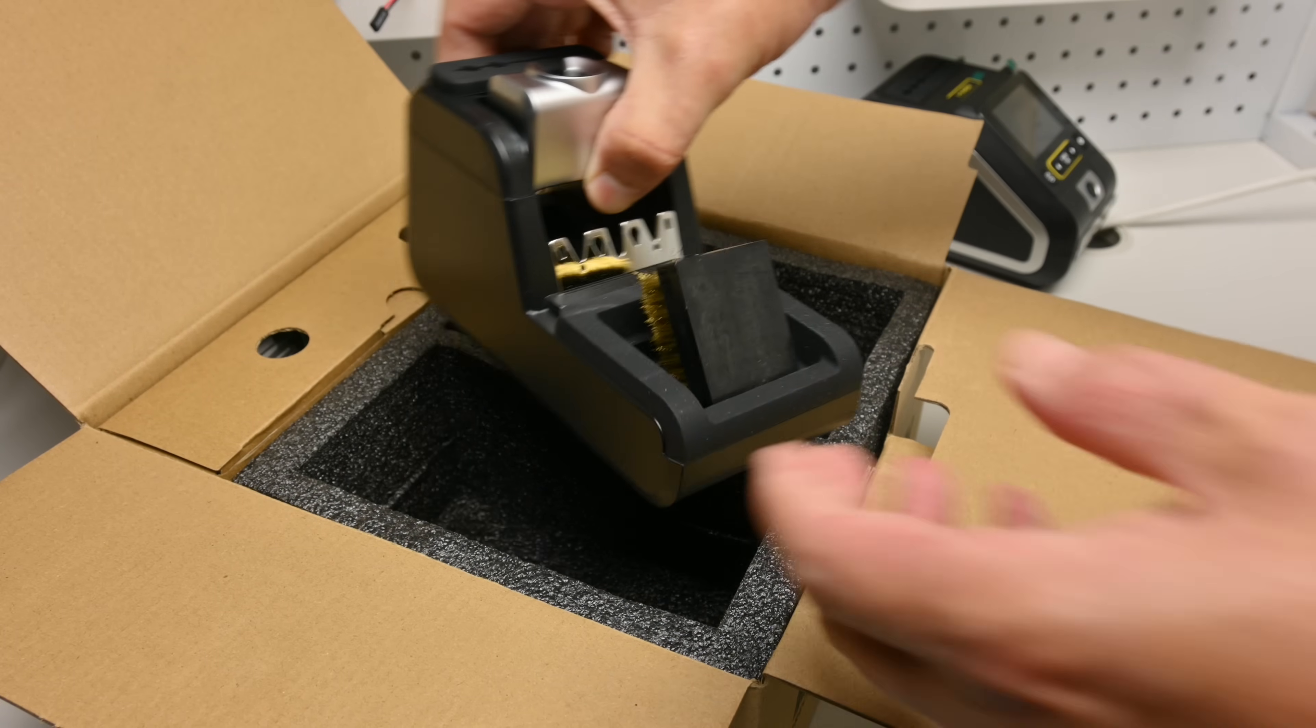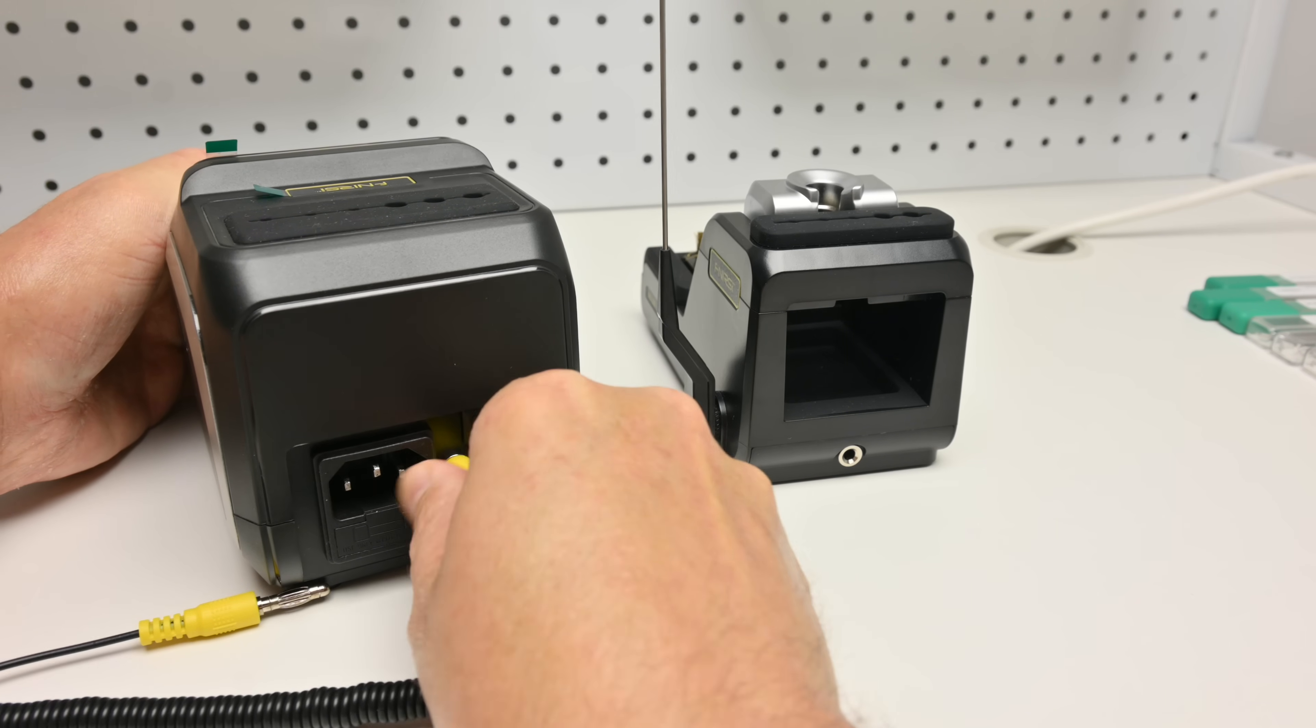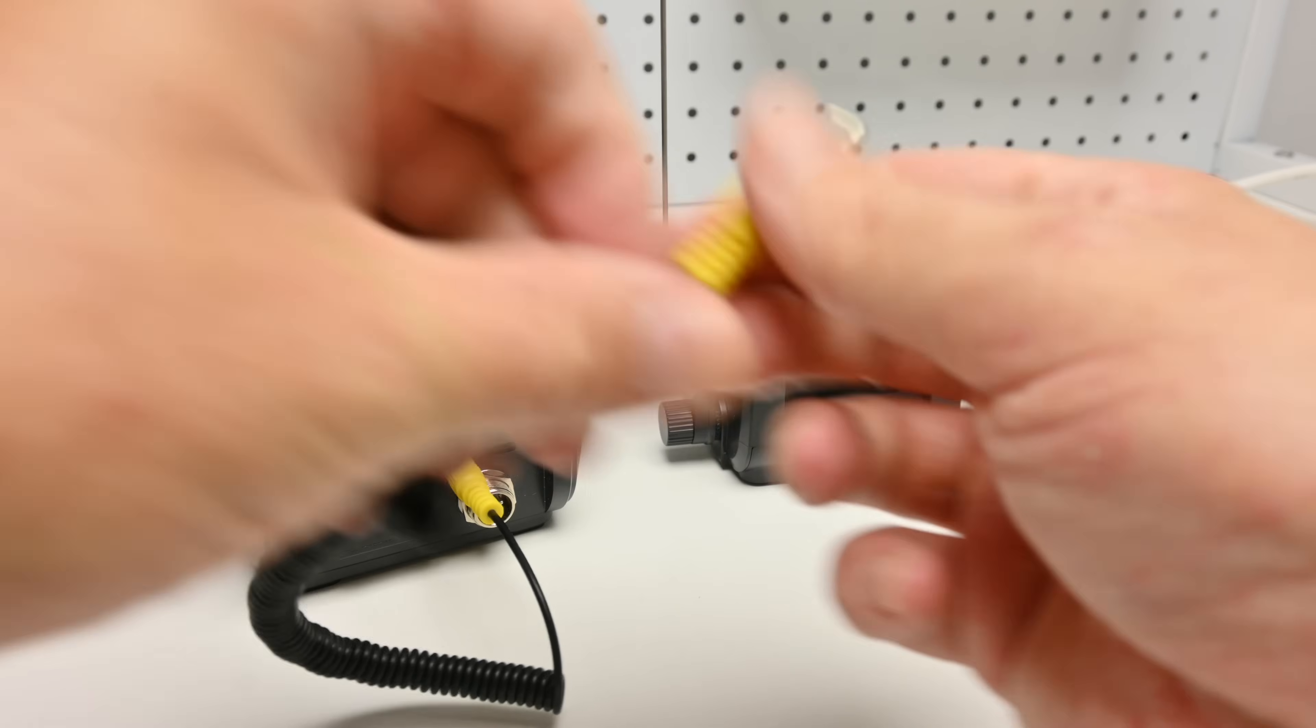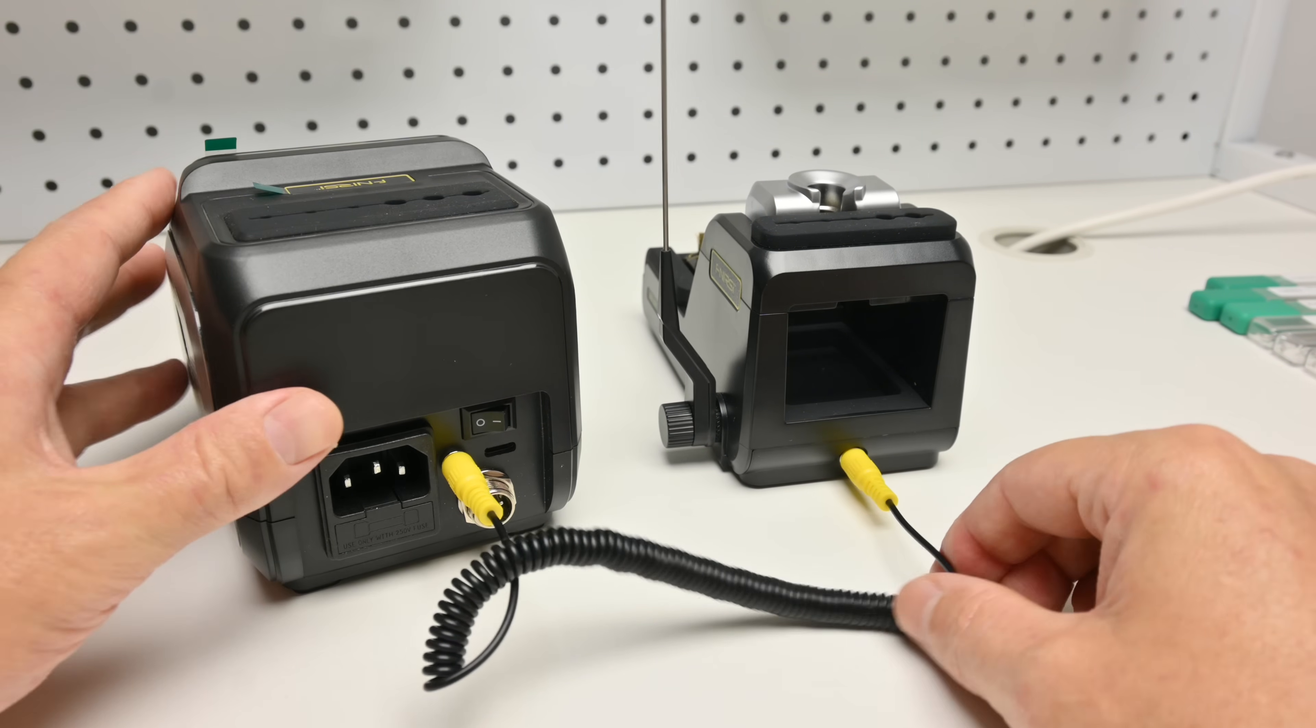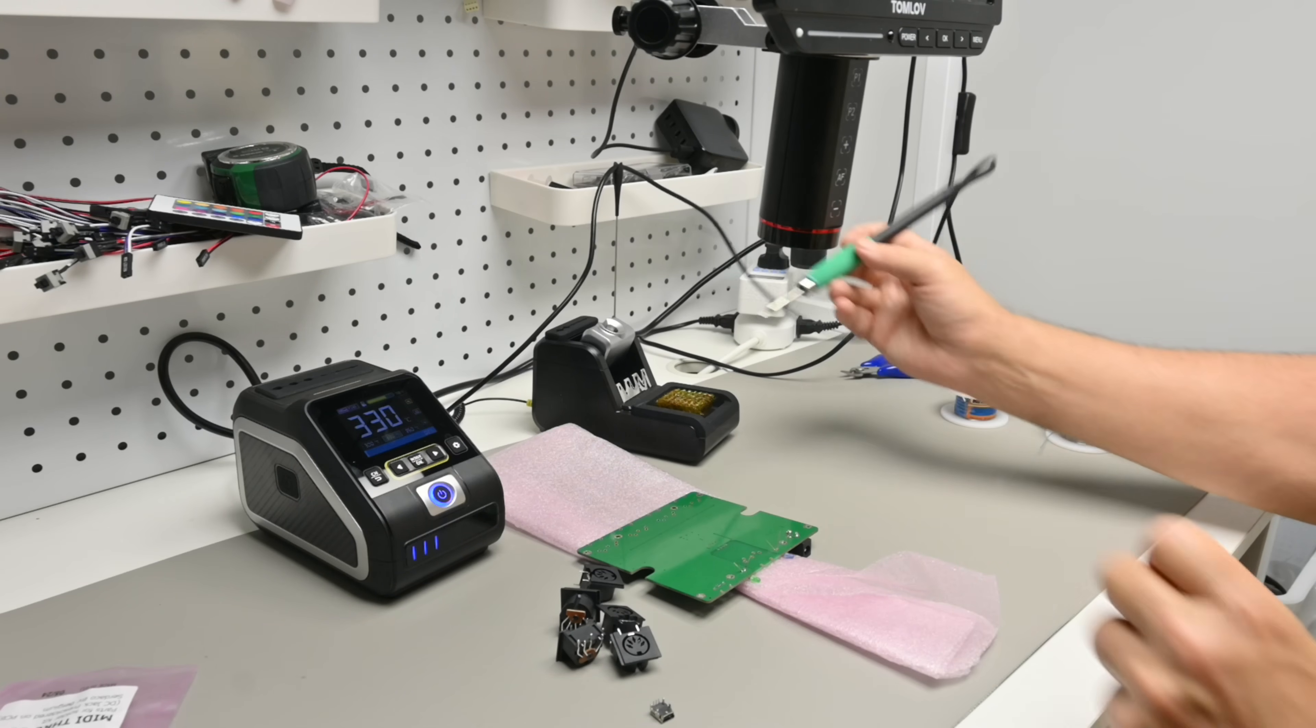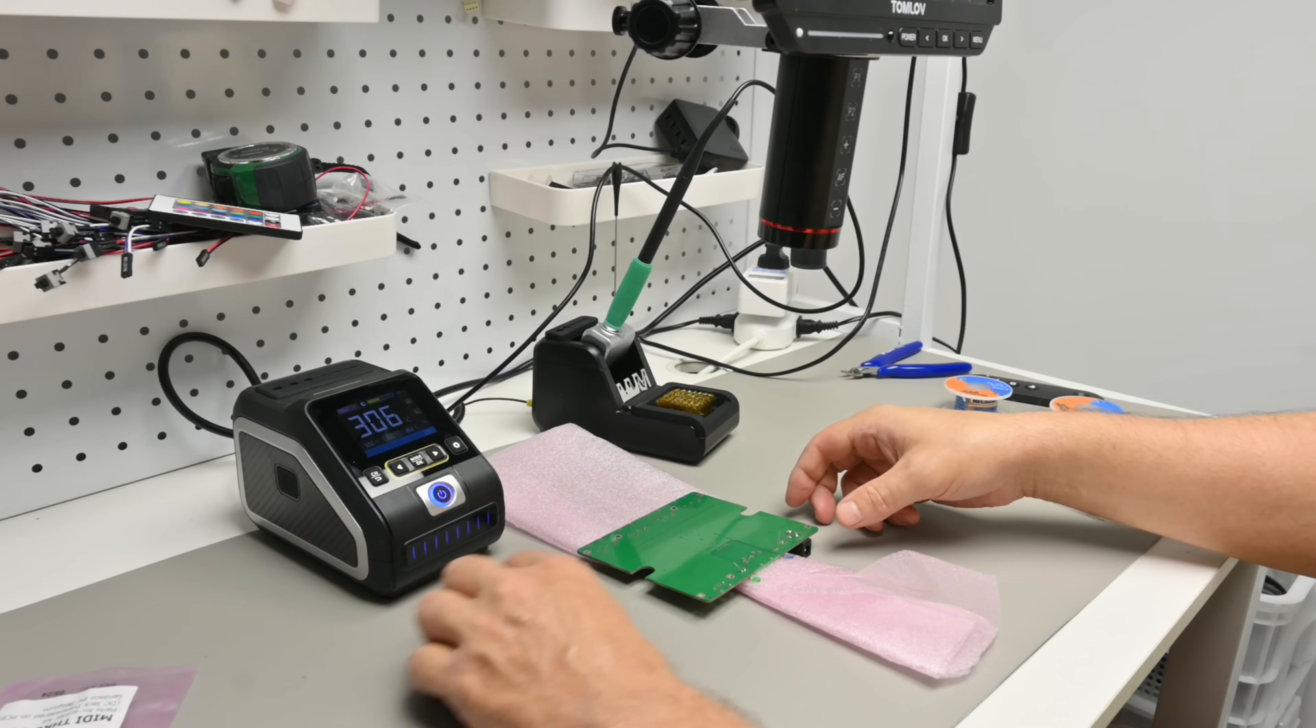And here we have the stand for the soldering iron. It connects with a cable to the main base station to enable hibernating the soldering iron when you put it down. So this will lower the temperature to 100 degrees looking after the iron tips.